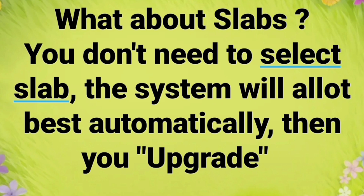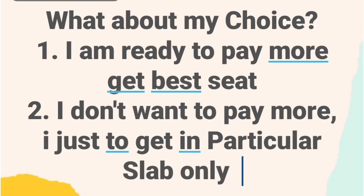What about slab? How do I select slab 1, slab 2, slab 3, or slab 4 of the fee structure? The answer is that you don't need to select a slab — the system will automatically select the best slab for you, and then you can upgrade. Some students will ask: what if I am allotted a particular seat and I am ready to pay more to get an even better seat? And some will say they don't want to pay more — they want to fix their slab because that is their budget. I will give the complete answer covering both scenarios.